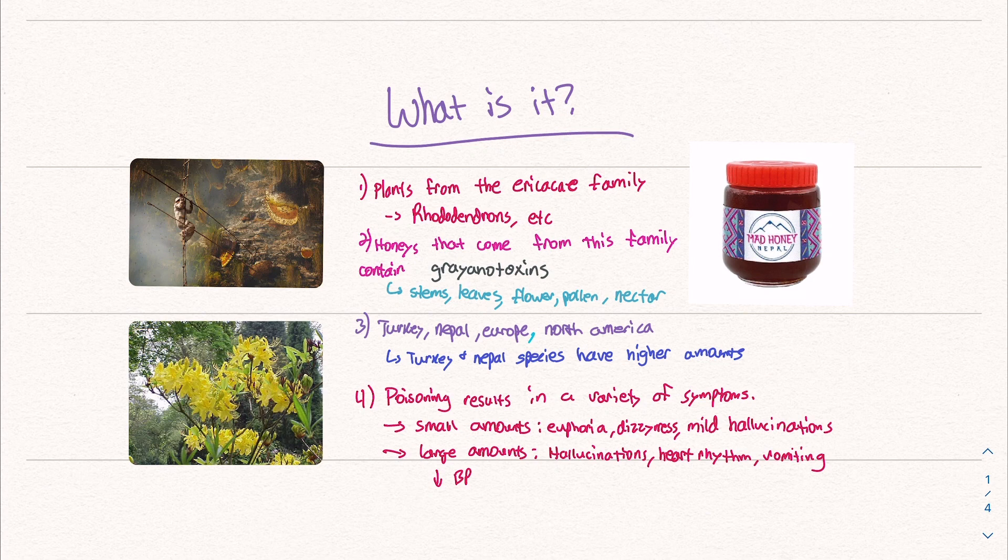What is mad honey? Well, mad honey comes from these plants that belong to the ericaceae family like rhododendrons. Plants like this, there's a bunch of different ones. The honeys that come from this family contain these things called granotoxins. And just like nicotine and tobacco, you can find these toxins in all parts of the plant: stems, leaves, flower, pollen, nectar, all that stuff.